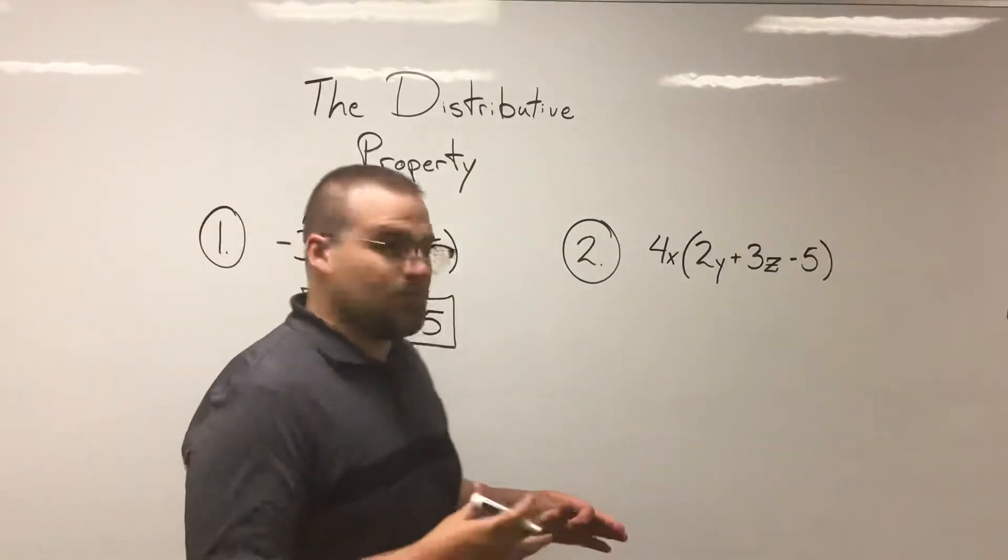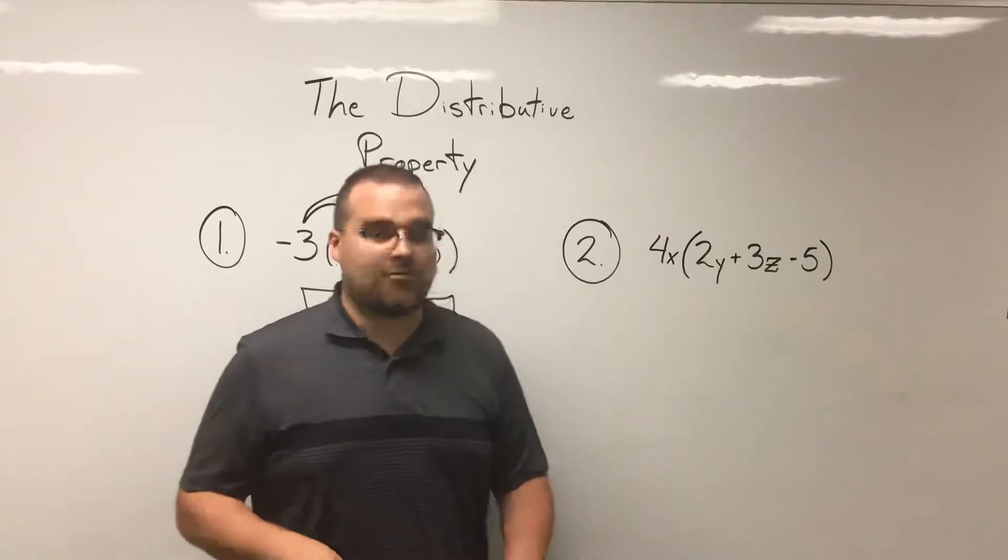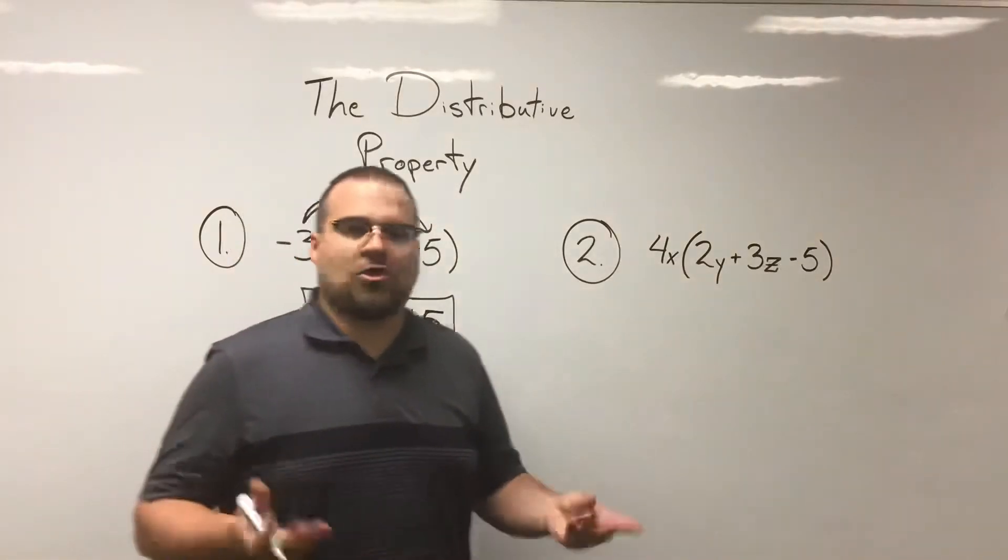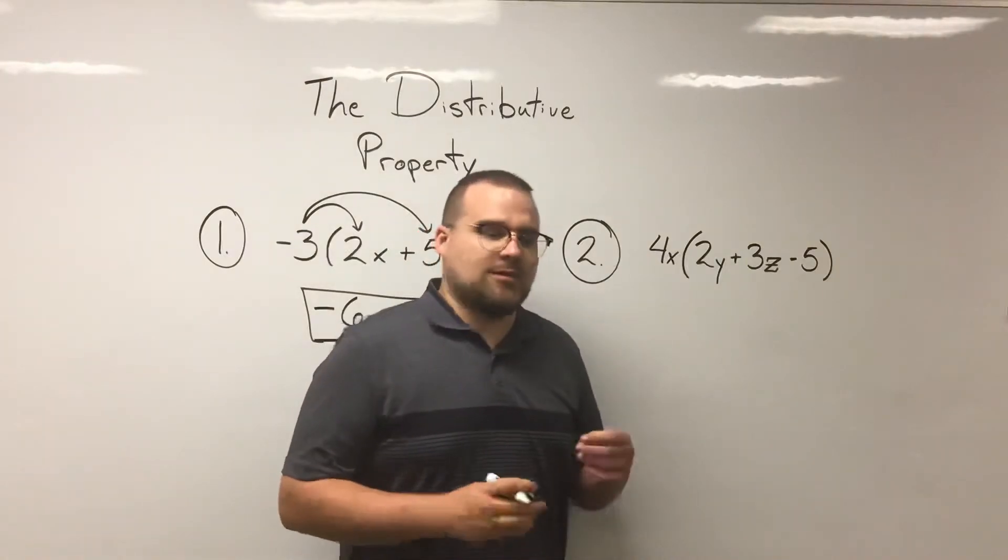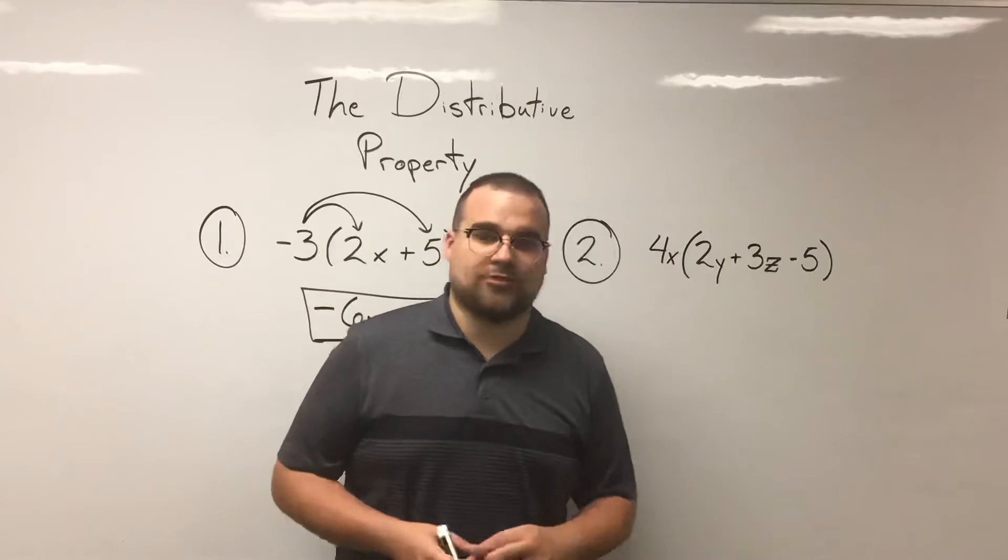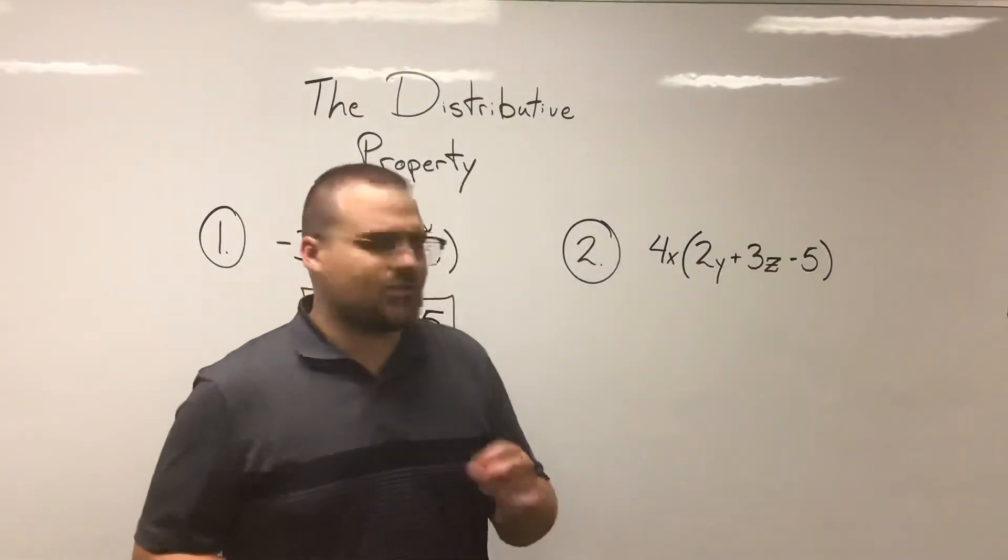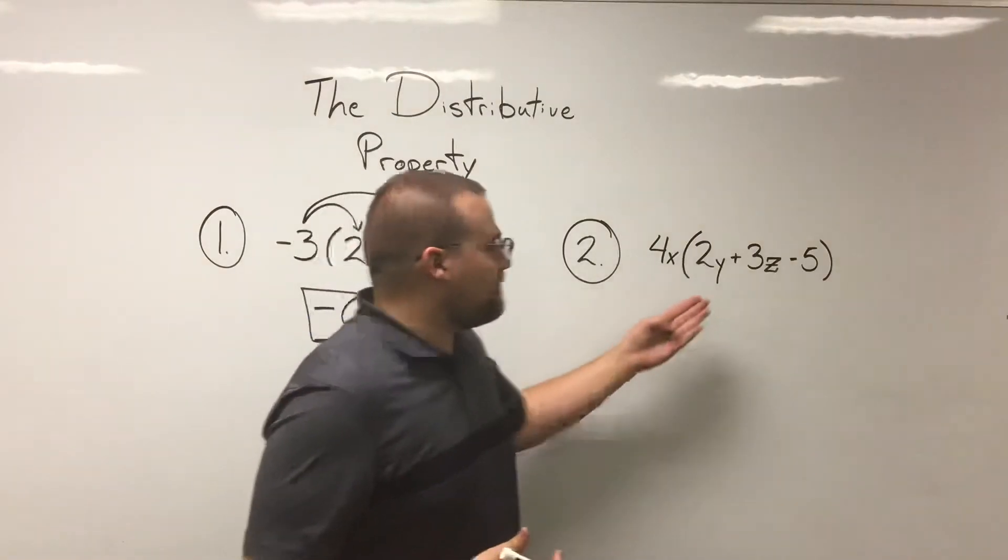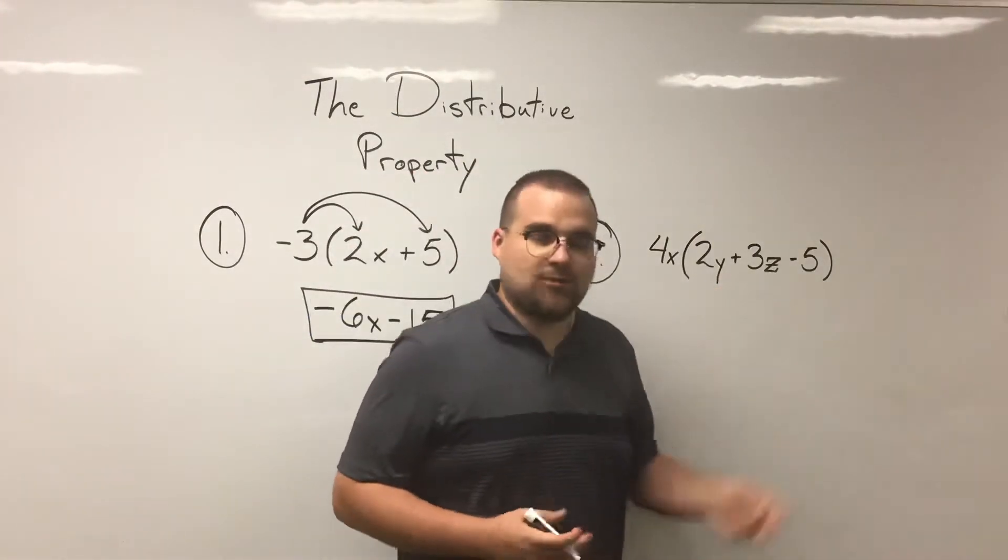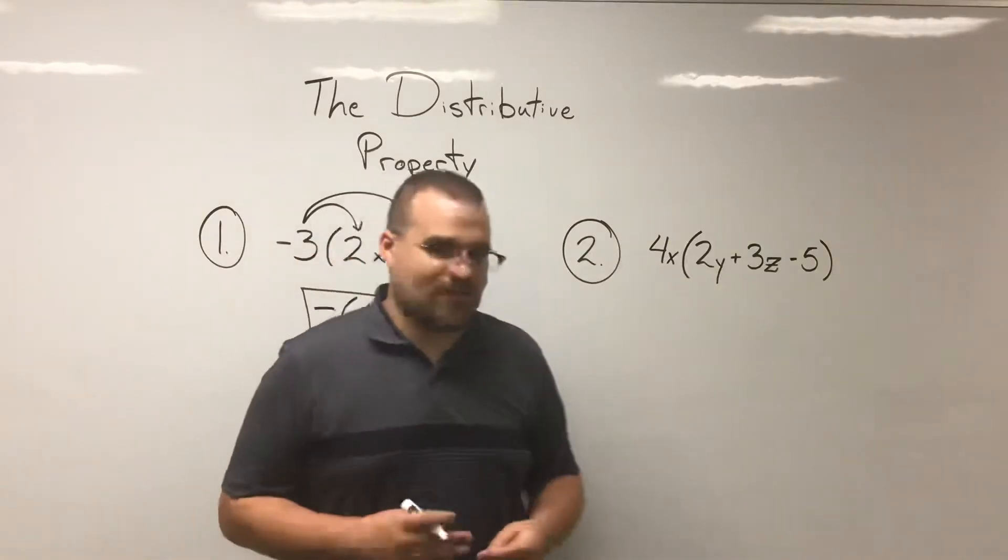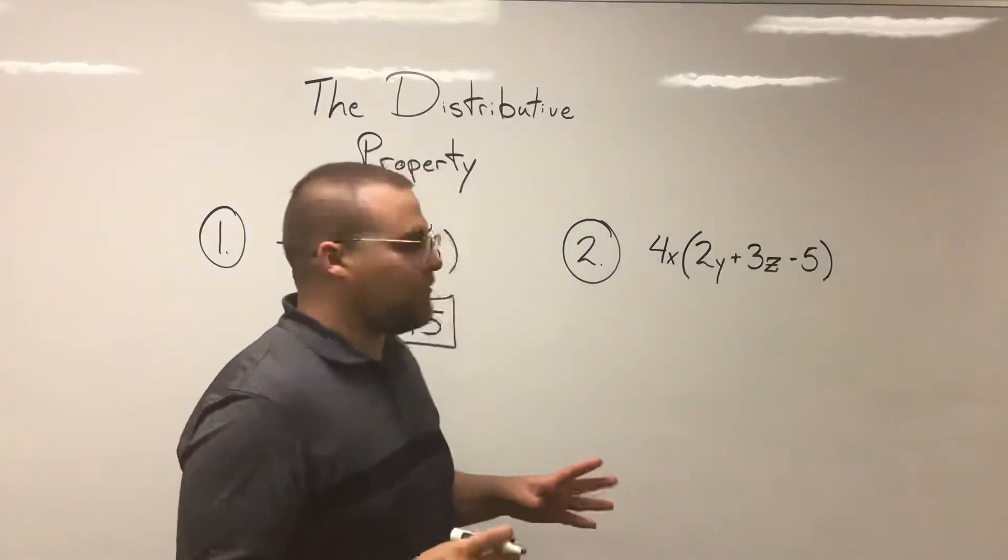Number two is a little different. It's a little more complex on a couple of different fronts. One, the term on the outside is not only a whole number in the four, but it also has a variable attached to it. So it's 4x. That's an added layer of complexity there. In addition to that, we don't just have two terms inside the parentheses. We have three. So there's another step.